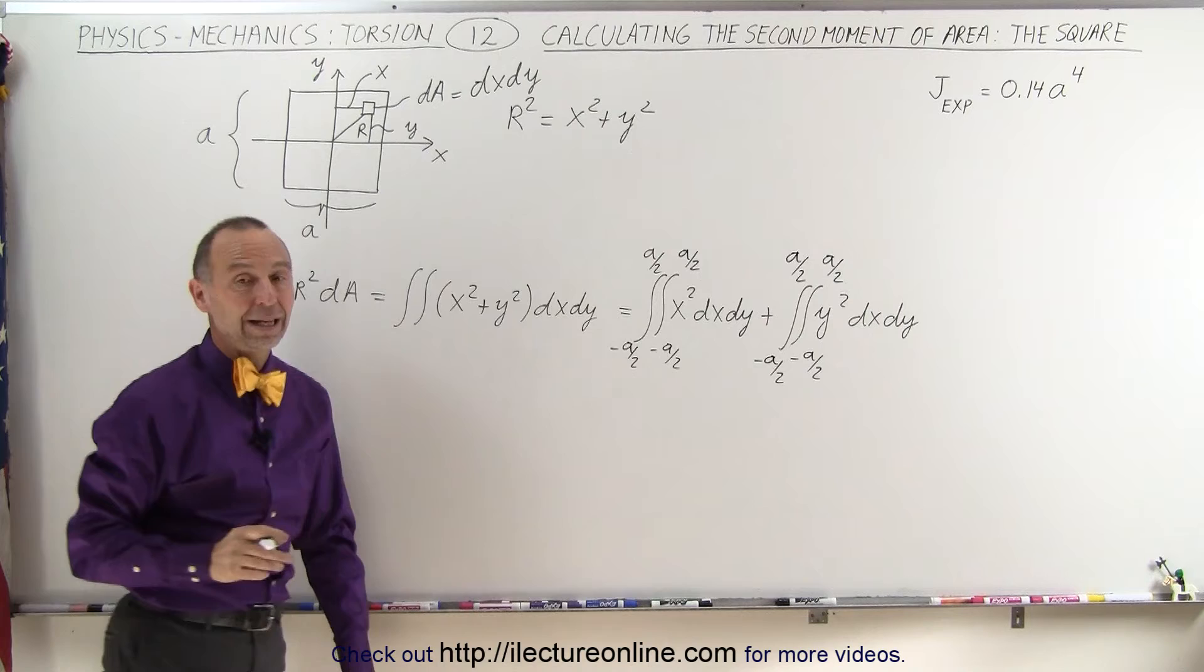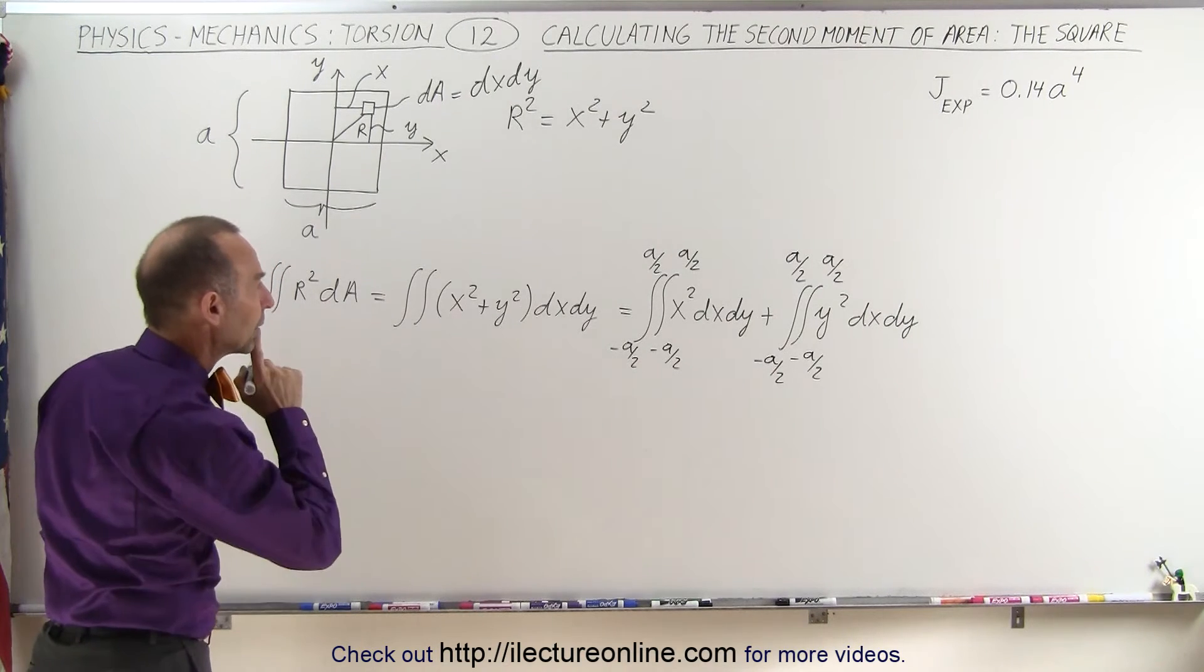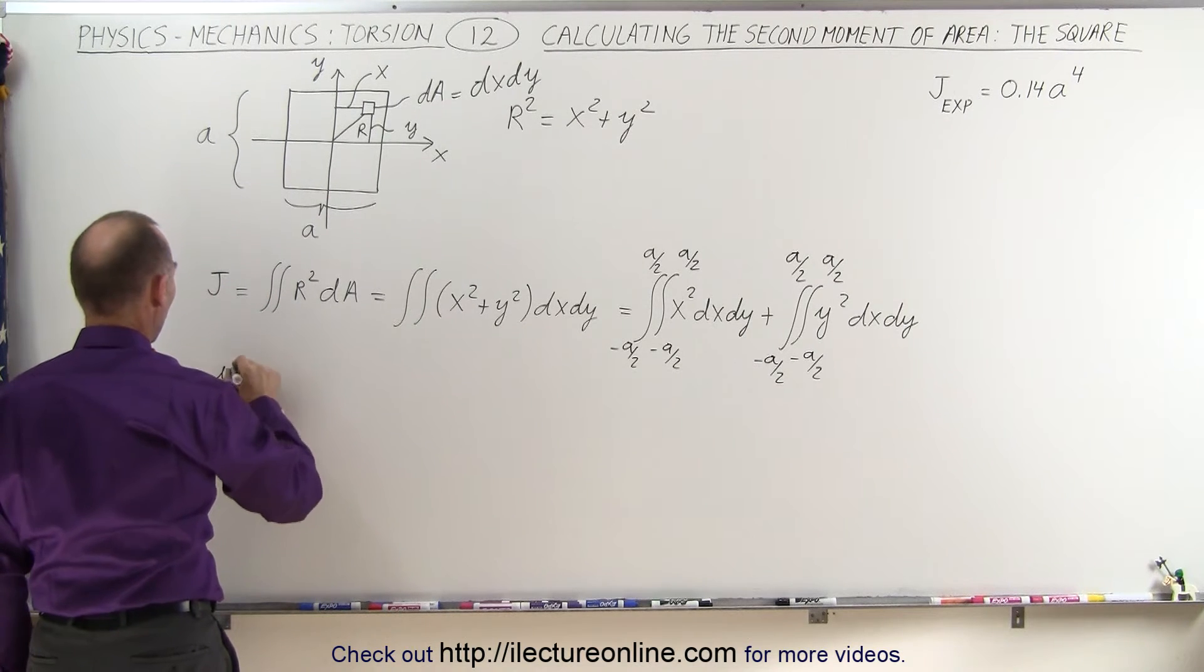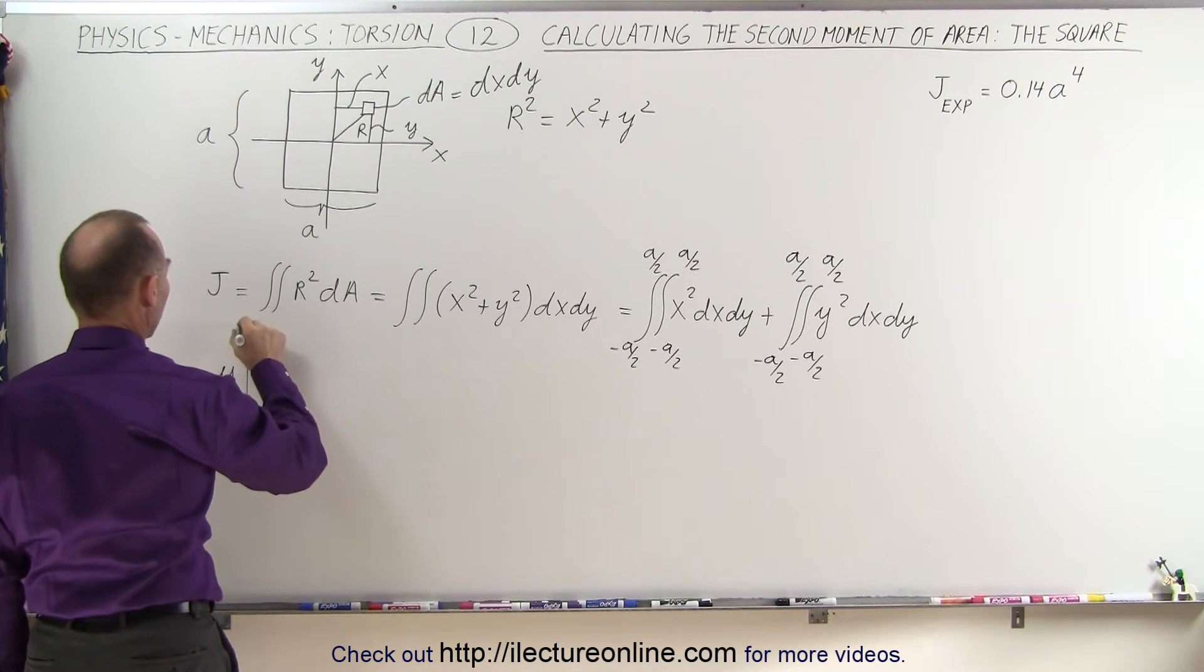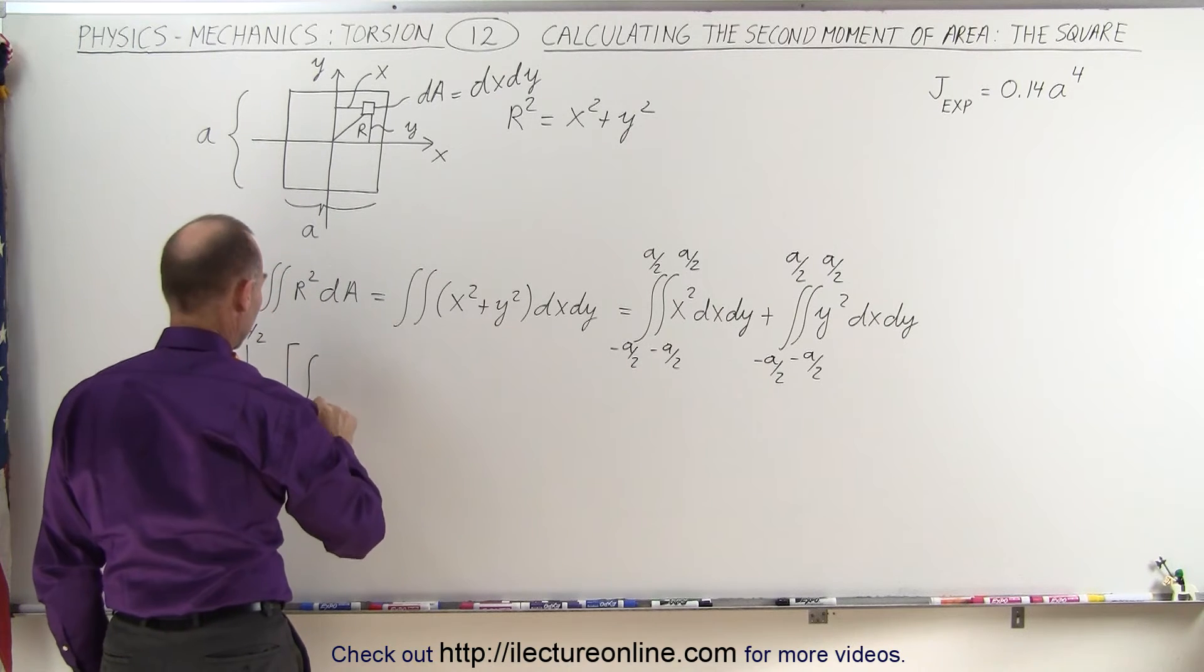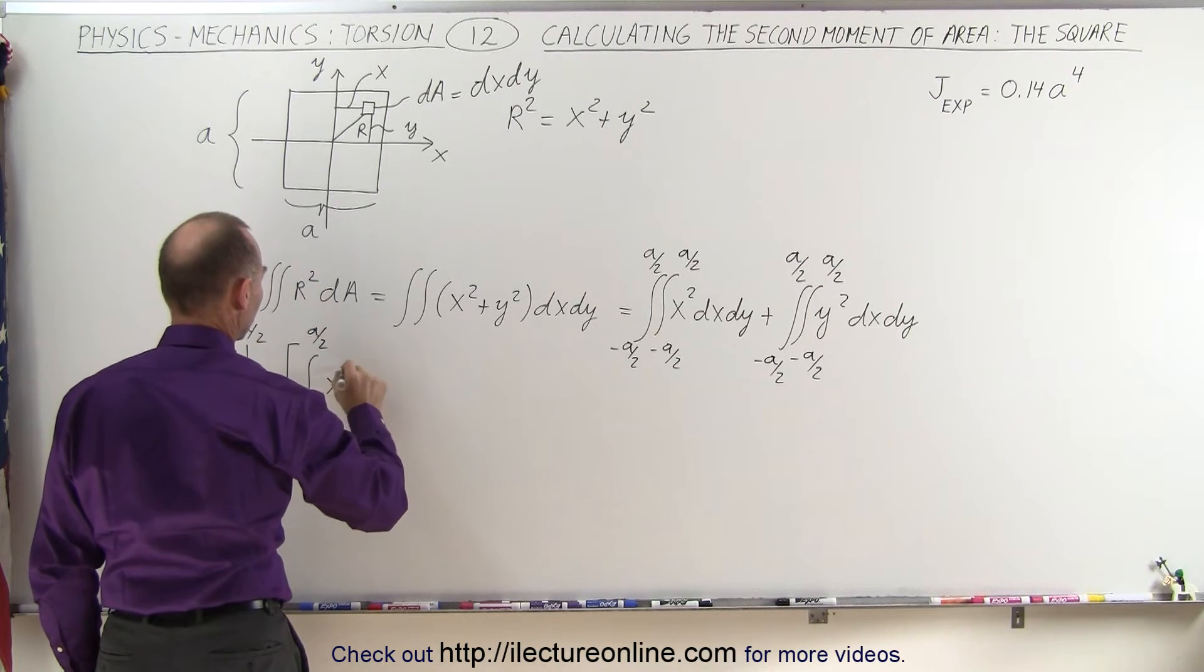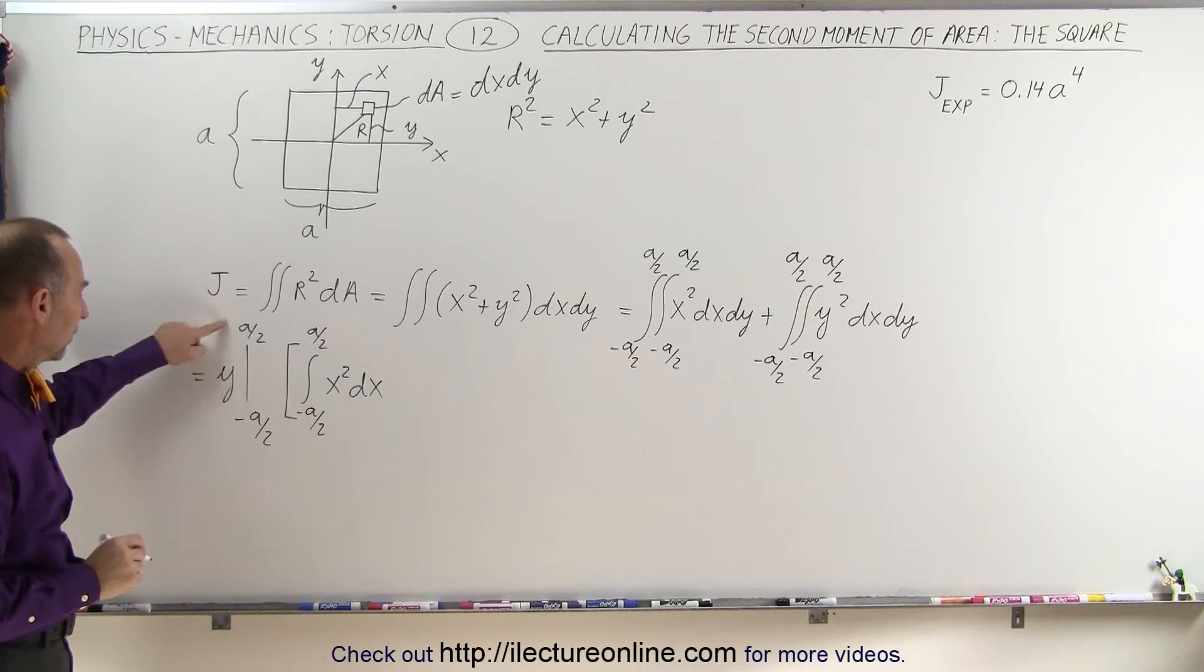So let's go ahead and find the first set of integrals. What we can do there is we first integrate y. So this is equal to y evaluated from negative A over 2 to positive A over 2 times the integral from negative A over 2 to positive A over 2 of x squared dx. When we plug in the limits,